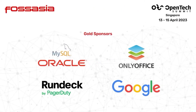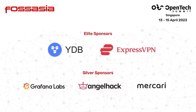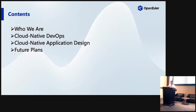Today we're going to have four parts. The first part will give you a brief introduction on who we are and an overview of the landscape of our infrastructure in the OpenEuler communities. For the second and third parts we will give details on cloud native DevOps and cloud native application designs. For the last part we will talk about future plans, including service mesh, cloud IDEs, and message centers.